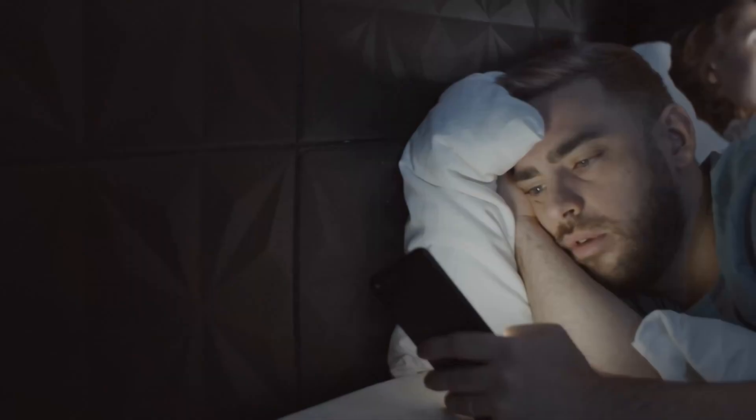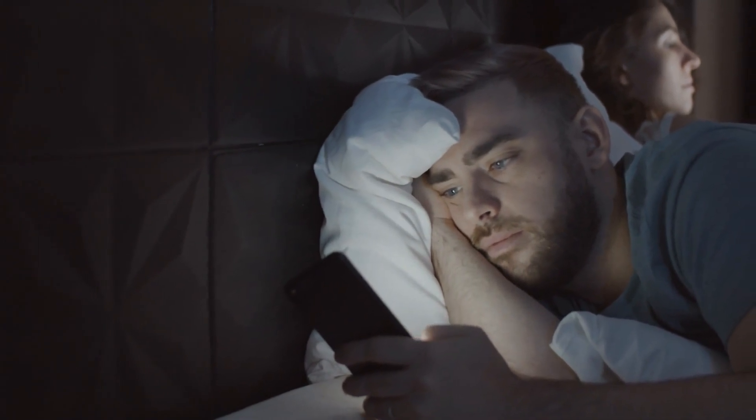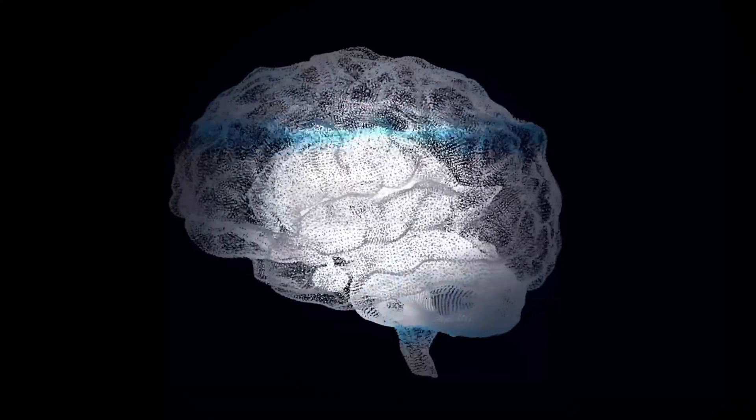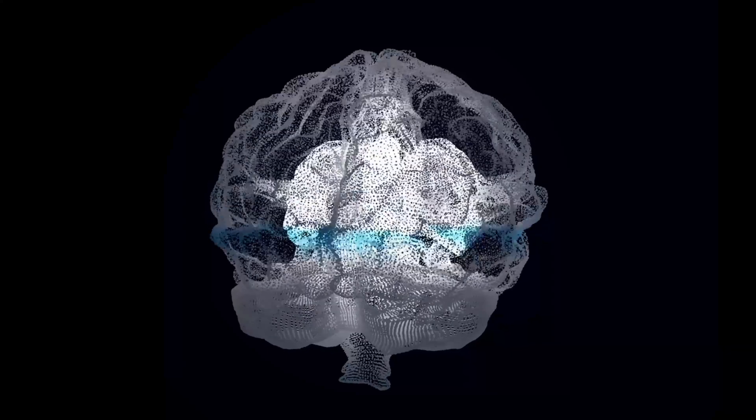Part two, the brain on social media dopamine hijacking. What we're talking about here isn't just distraction. It's neuroplasticity. Your brain is constantly changing in response to how you use it. This is called neuroplasticity, the ability of the brain to rewire itself based on experience.